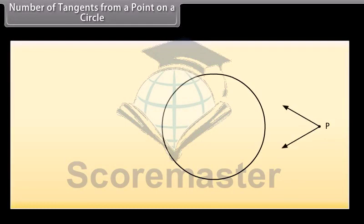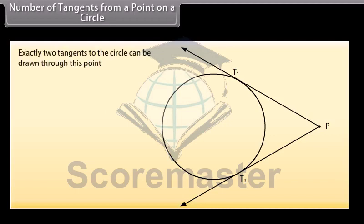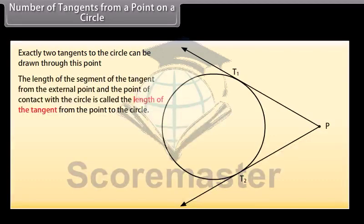Finally, take a point P outside the circle and try to draw tangents to the circle from this point. We can find that exactly two tangents to the circle can be drawn through this point. The length of the segment of the tangent from the external point to the point of contact with the circle is called the length of the tangent from the point to the circle. Here PT1 and PT2 are the lengths of the tangents from P to the circle, and they have a common property which we will learn next.